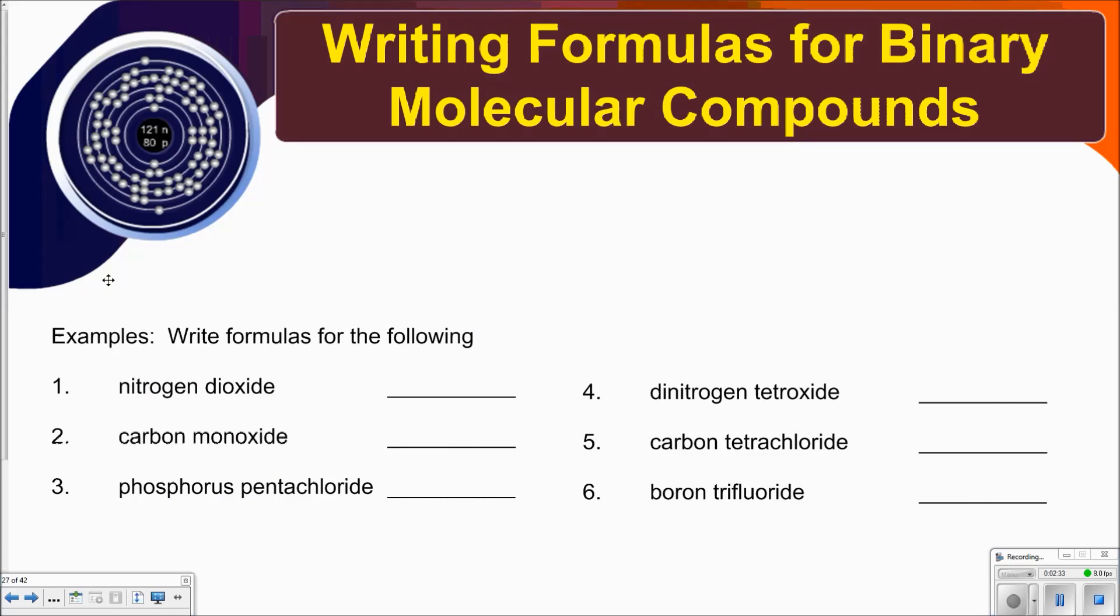Let's go ahead and practice some of these. You can see how easy they really are. So if there's something called nitrogen dioxide, notice there's no prefix for nitrogen, so we're going to assume there's just one. And then dioxide, di indicates that there's two oxygens, so it's NO2, nitrogen dioxide. You probably already knew that because you've heard of it so many times.